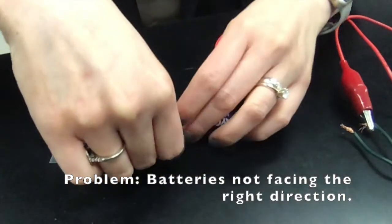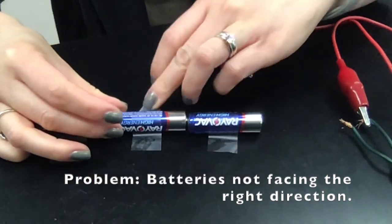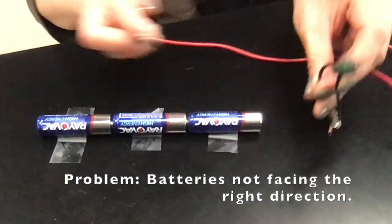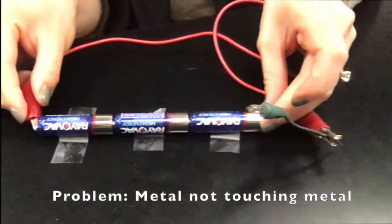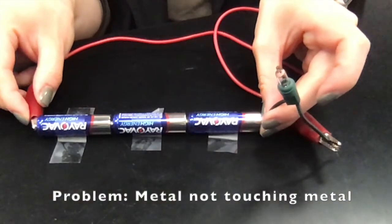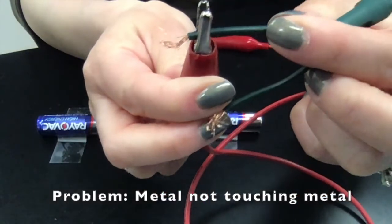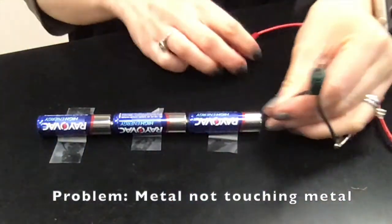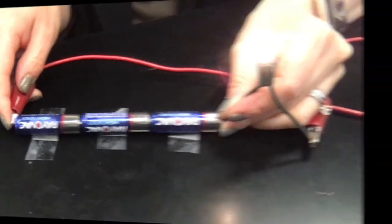Your light might light up a little bit, but it won't light up with the full voltage of all three batteries. Now the batteries are all facing the same way and you could see that the light completely lights up. I think the most common problem I saw was students having metal not touch metal. Notice how the metal is touching the insulation wire. You need to actually clip metal onto the exposed copper wire to have a path for the electrons to follow. Now it lights up.